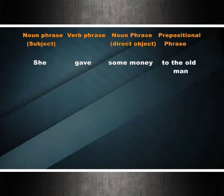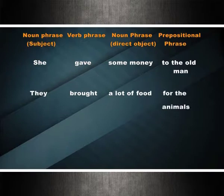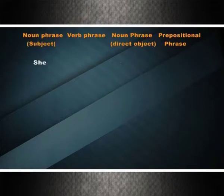Double object verbs follow the pattern N + V + N + prepositional phrase. Examples: she gave some money to the old man; they brought a lot of food for the animals. The verb can also be followed by two noun phrases, where the first is the indirect object and the second is the direct object: she gave the old man some money; they brought the animals a lot of food. These verbs are called double object verbs.